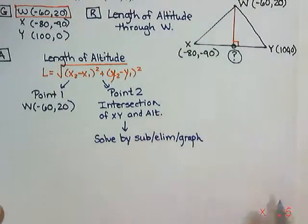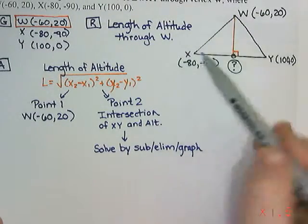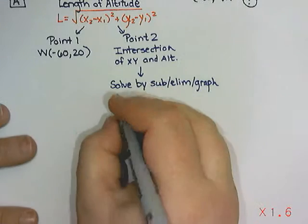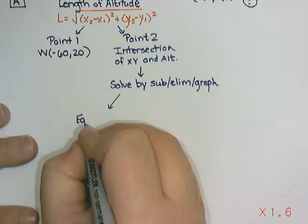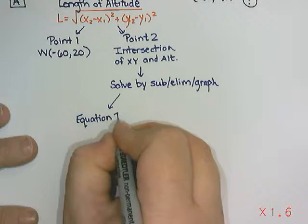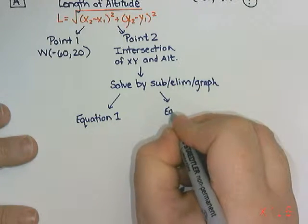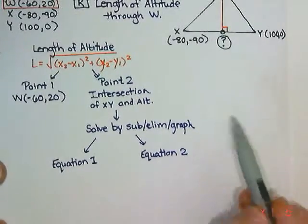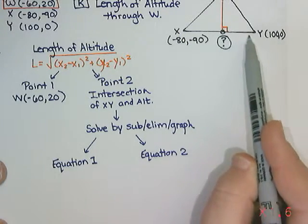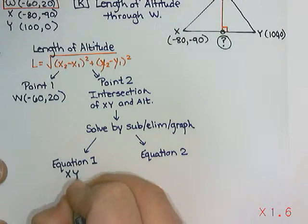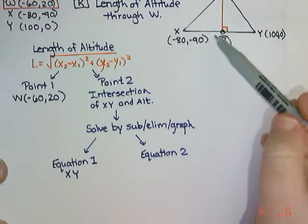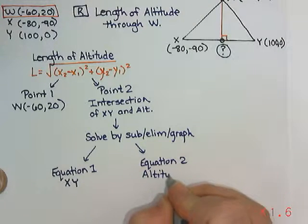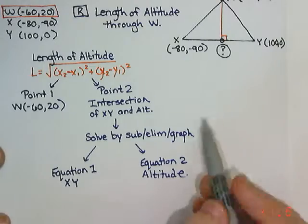You need to know the equation of XY and we also need to know the equation of my altitude. So to do substitution or elimination, I need two equations. One of those equations is going to be the equation of the side XY. The other equation is going to be the altitude.